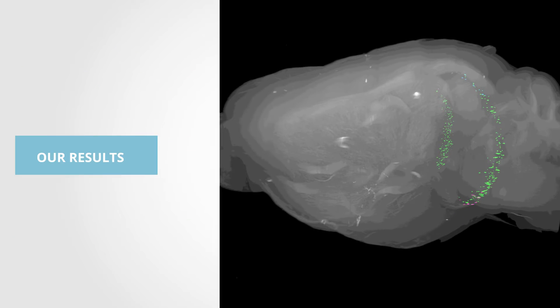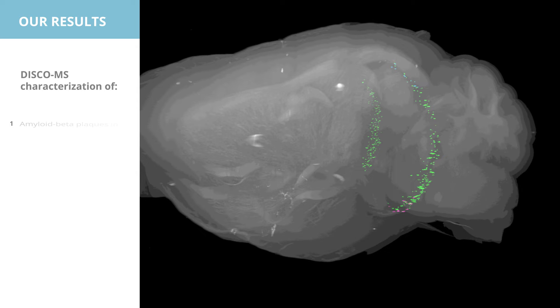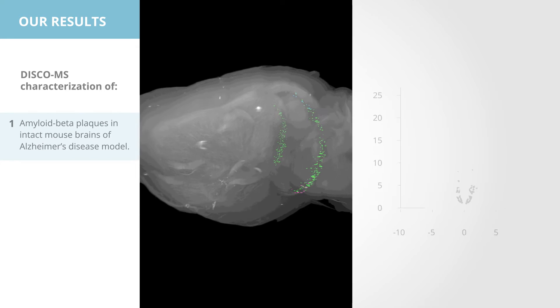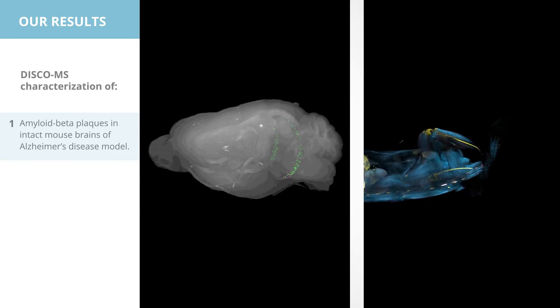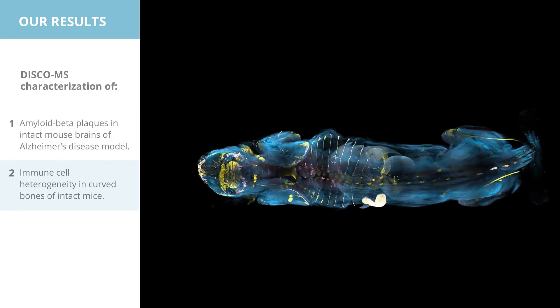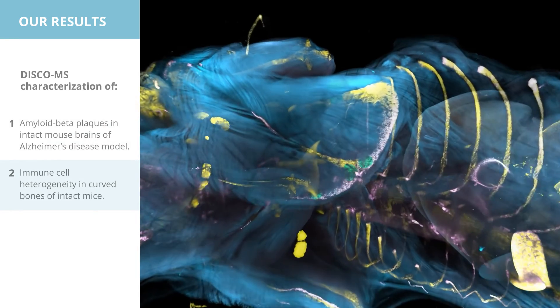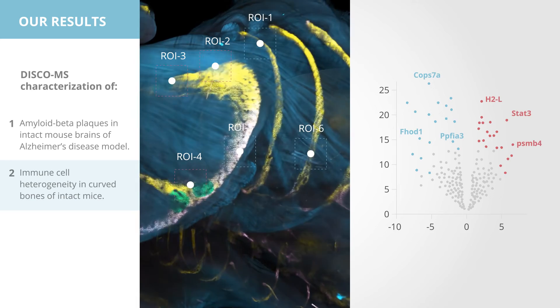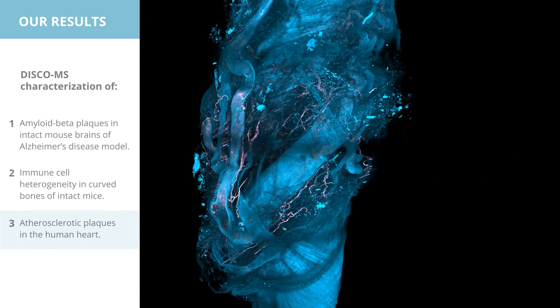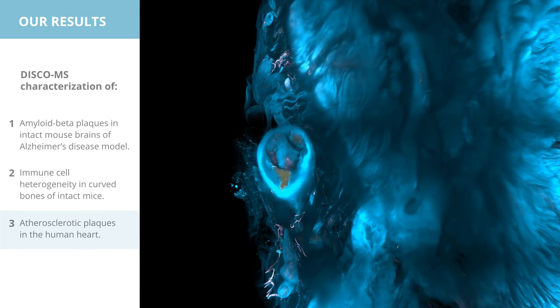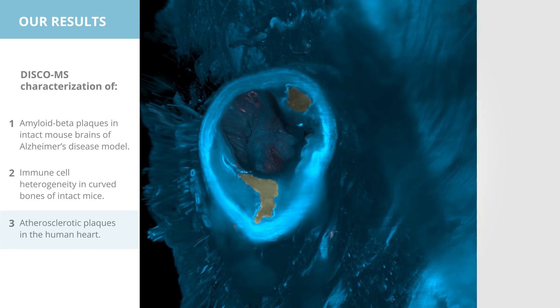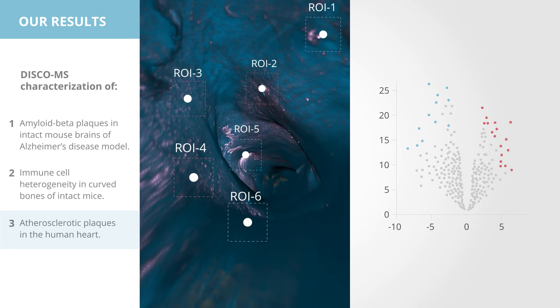We use DISCO-MS to characterize amyloid beta plaques in intact mouse brains of Alzheimer's disease model, immune cell heterogeneity in curved bones of intact mice, and atherosclerotic plaques in the human heart. We identify both molecules previously known in these conditions and new molecules that warrant further investigation.